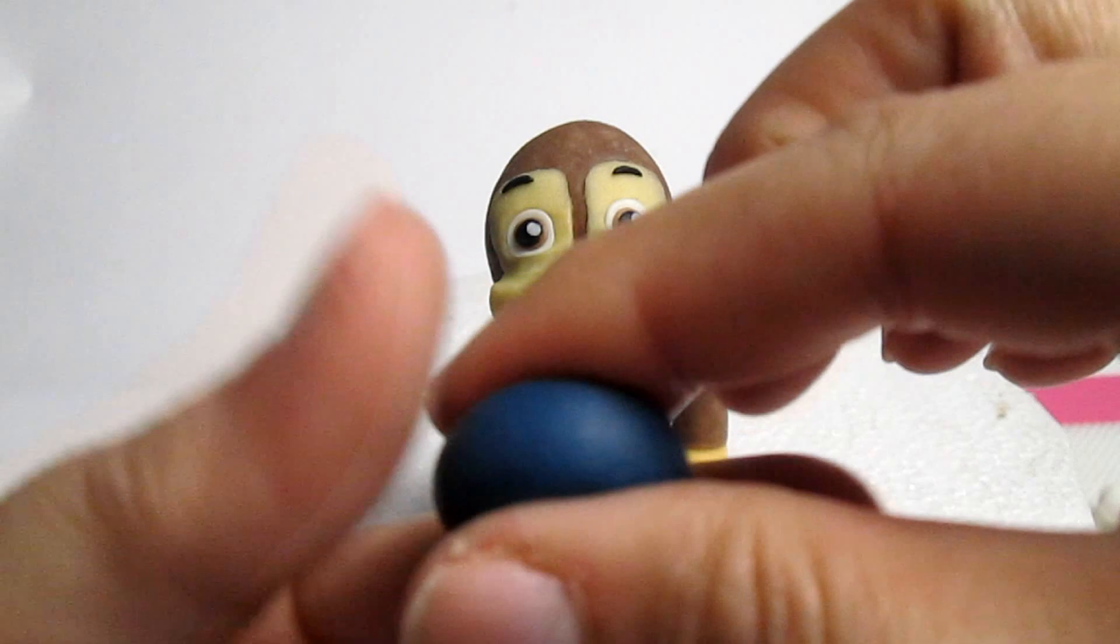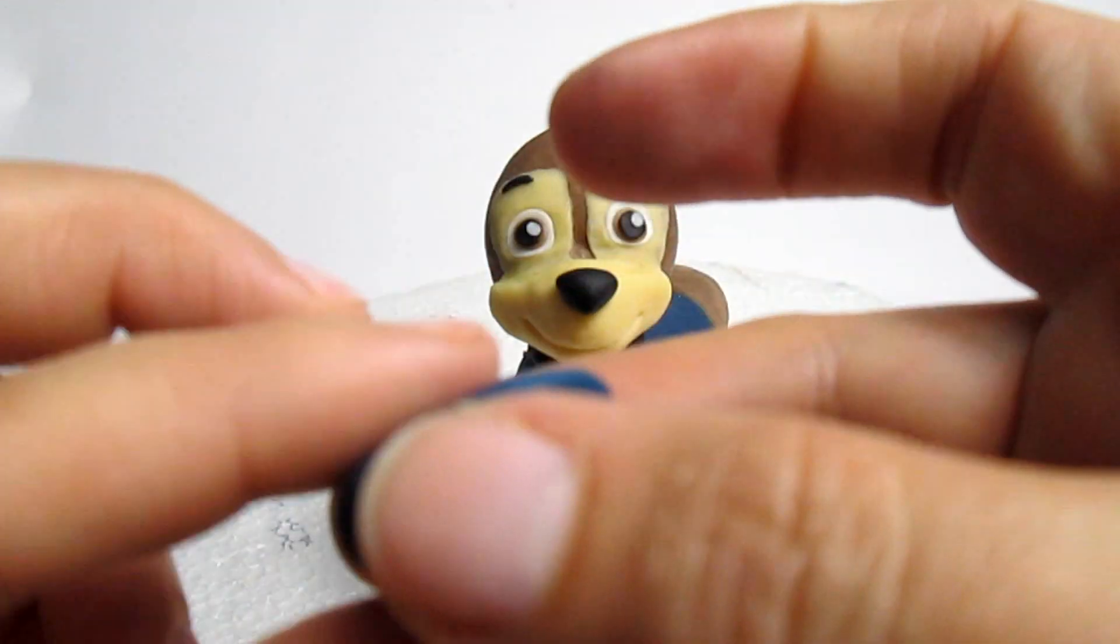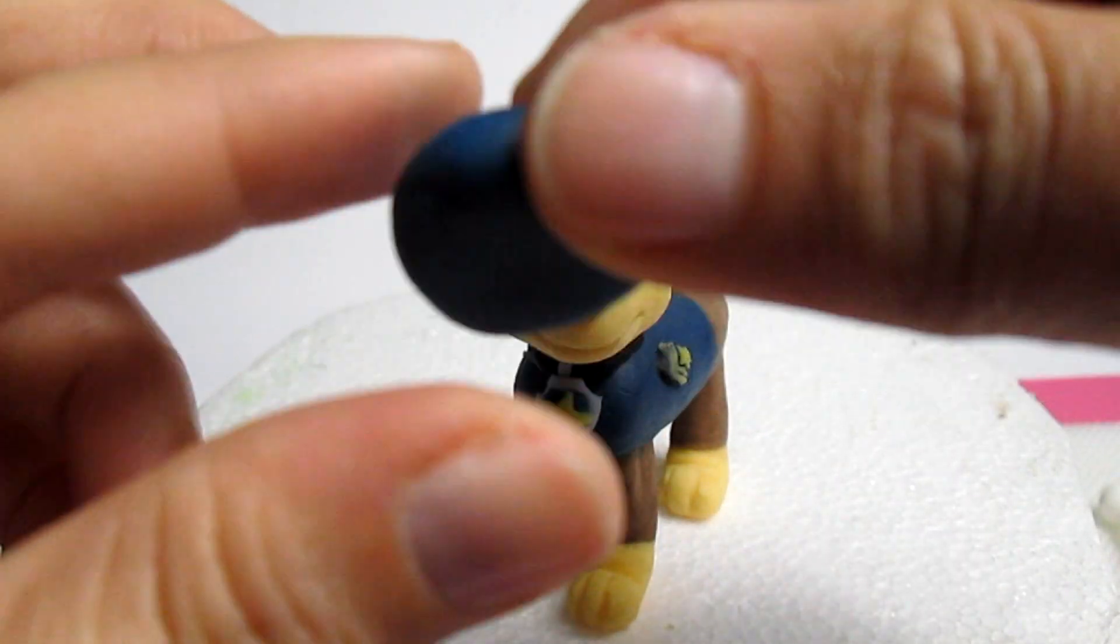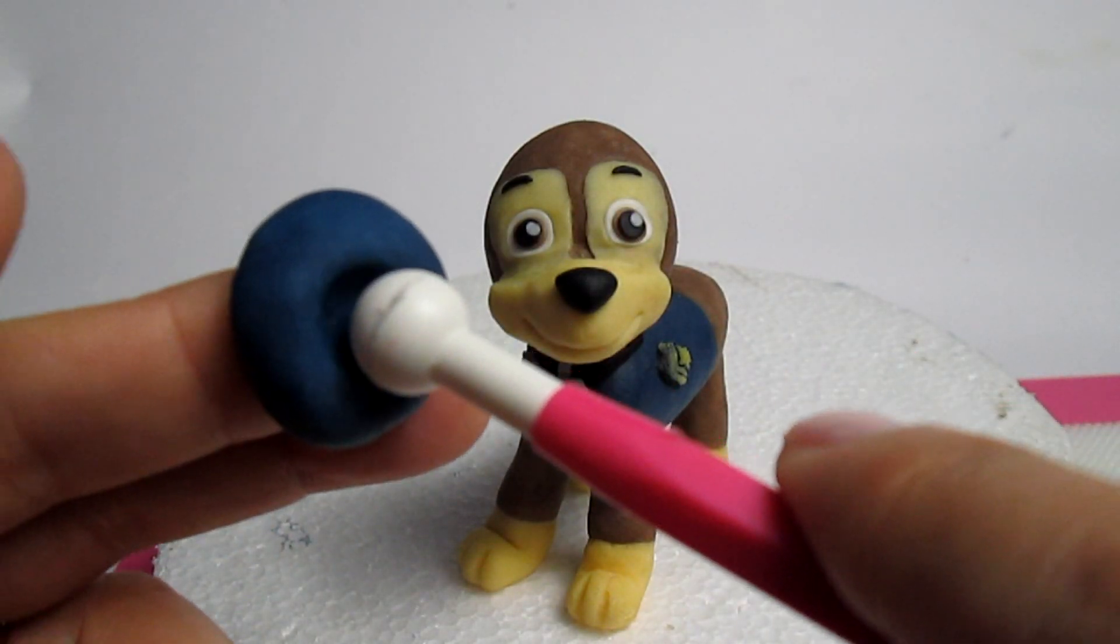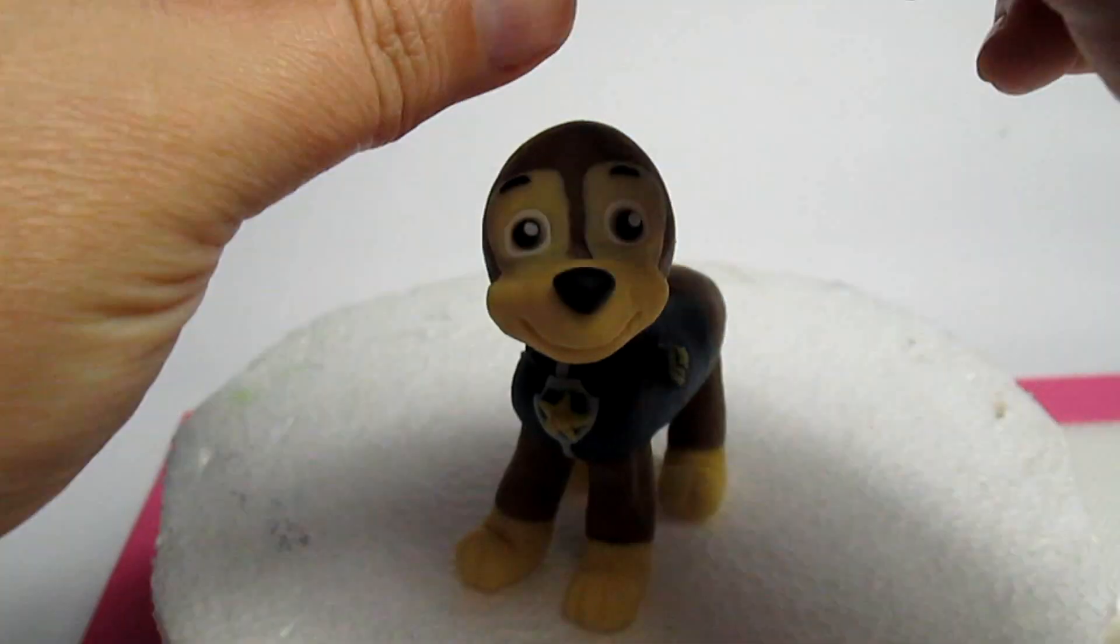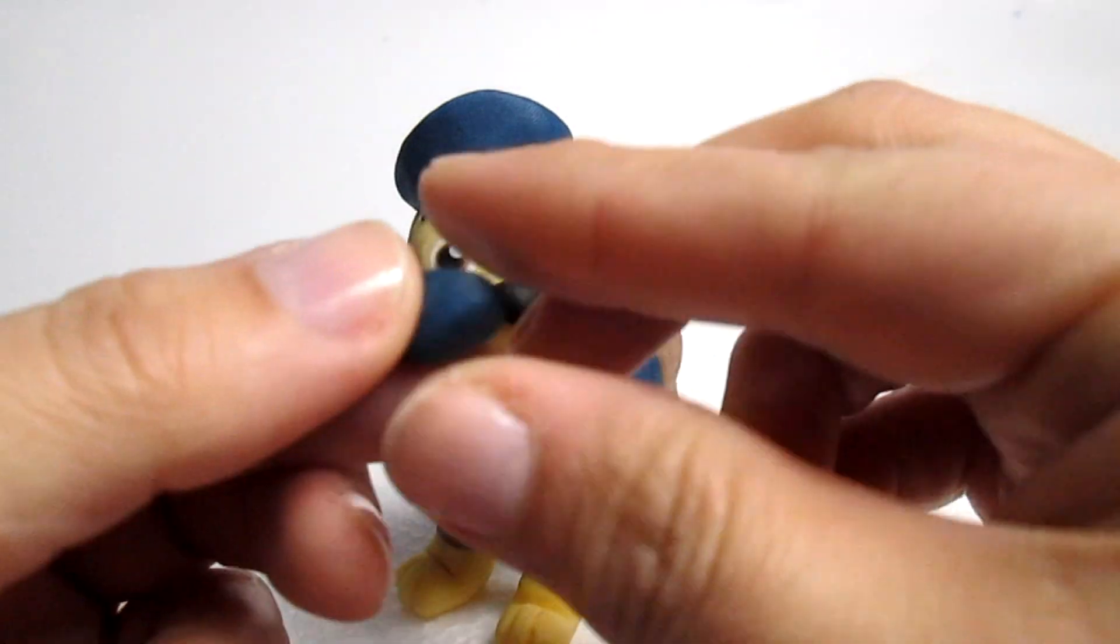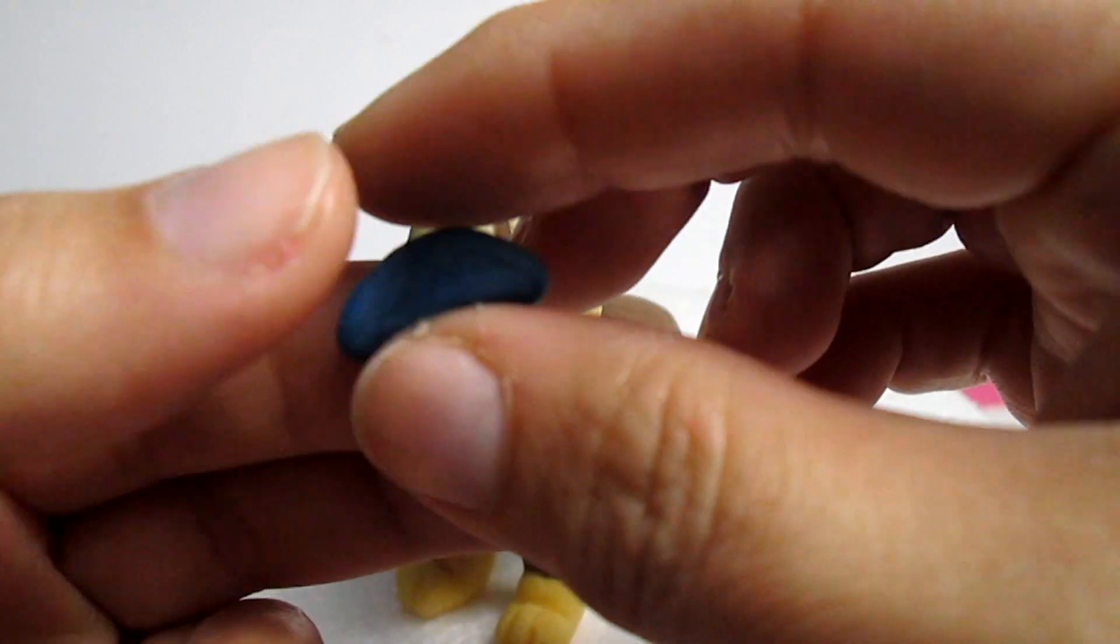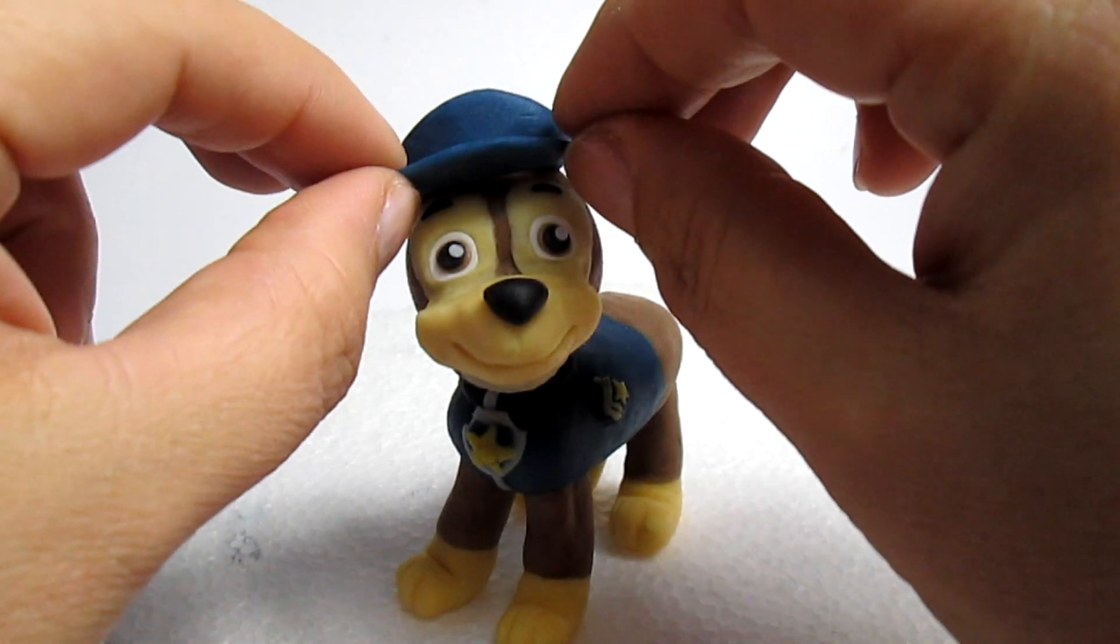To make the hat instead, I'm using some dark blue, and with my fingers I press and turn around until I get that hat shape. I make a hole in the middle of the hat so that I can put the head in it. Again using some dark blue, I'm shaping the front of the hat and place it on top of the eyebrows.